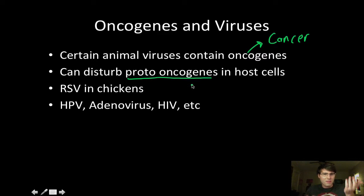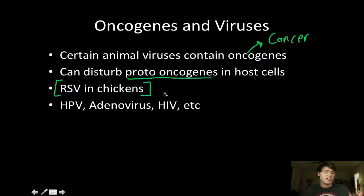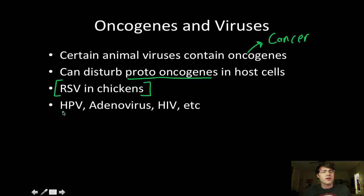Proto-oncogenes are genes that help keep the balance between proliferating too much or not being effective. The most observable example of this is RSV in chickens — the Rous sarcoma virus. You get infected and two weeks later you're covered in tumors. Other human viruses hypothesized to do this would be HPV, adenovirus, and HIV.